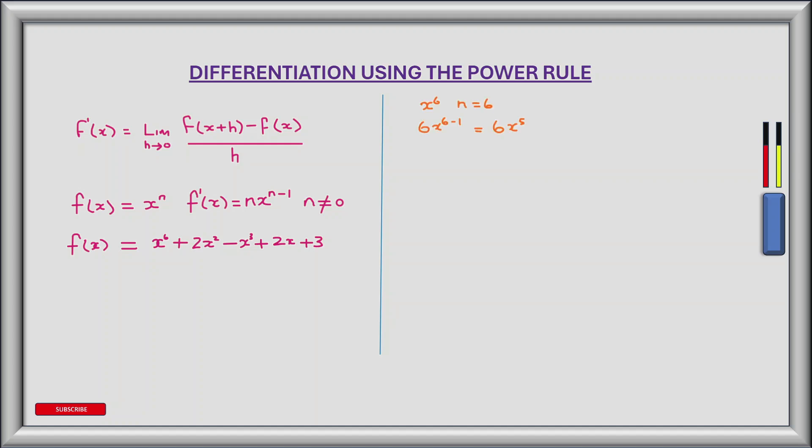Let's take x to the power of 6 first. For this term n is equal to 6. So according to the power rule we multiply x by 6 and decrement the power by 1. So we get 6 times x to the power of 6 minus 1, which is equal to 6x to the power of 5. So the first term we can put in is 6x to the power of 5.